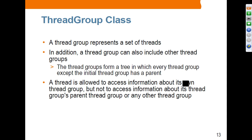Thread group represents a set of threads — a set of threads belongs to a thread group. When you are running a Java application, you will see two thread groups: the system group and the application group. Thread groups form a tree in which each thread group, except the initial thread group, has a parent, so thread groups can have a hierarchical tree structure. A thread is allowed to access information about its own thread group but not its parent thread group.